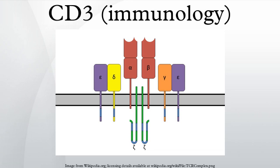The CD3 gamma, CD3 delta, and CD3 epsilon chains are highly related cell surface proteins of the immunoglobulin superfamily containing a single extracellular immunoglobulin domain. Containing aspartate residues, the transmembrane region of the CD3 chains is negatively charged, a characteristic that allows these chains to associate with the positively charged T-cell receptor chains.